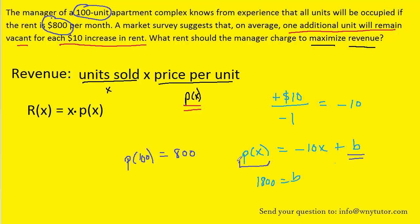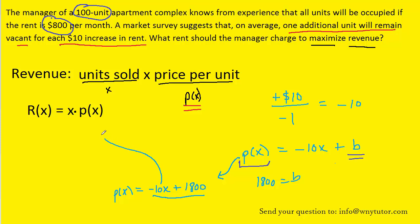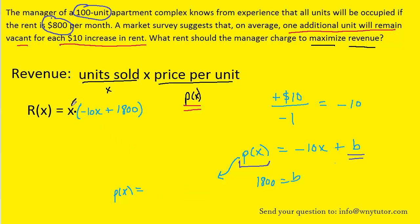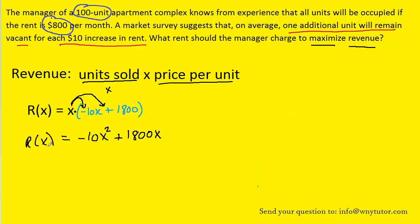The price function can now be written in its final form. Once we have that expression for price, we substitute it into our revenue equation and simplify by distributing the x, which gives us our final revenue function.